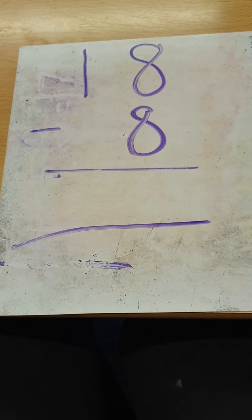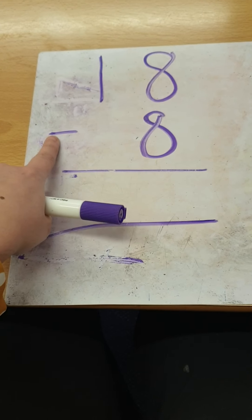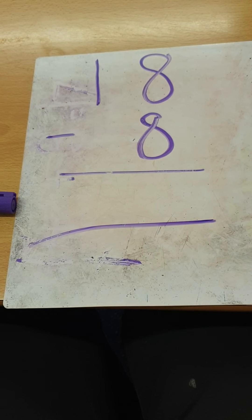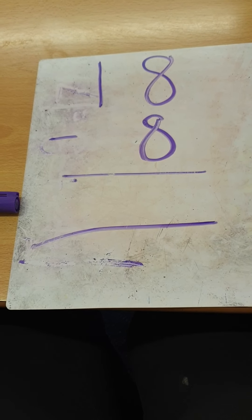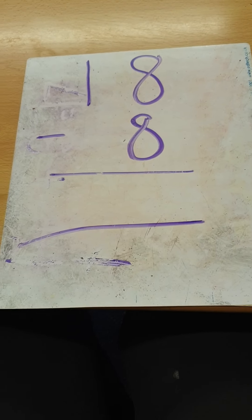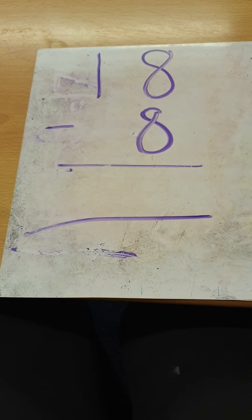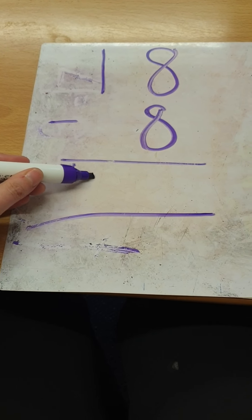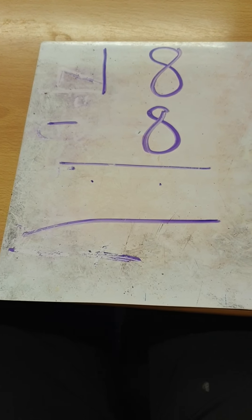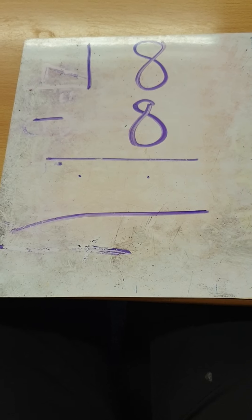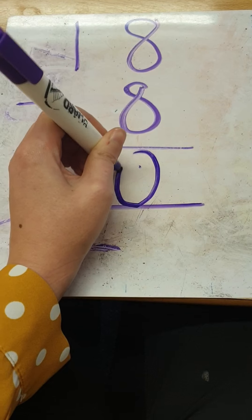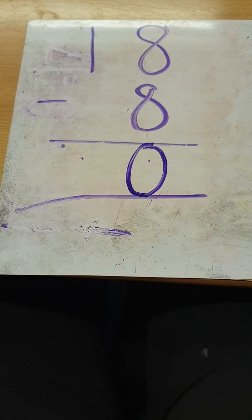Let's have a go. Could you do eight ones take away eight ones? It's a bit of a tricky one. Fantastic — it is zero. So where do I put my zero ones — do I put it in the tens column or do I put it in the ones column? Excellent work, we put it in the ones column. I'm going to put my nice big zero here like that.